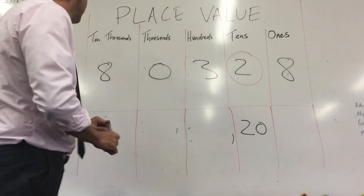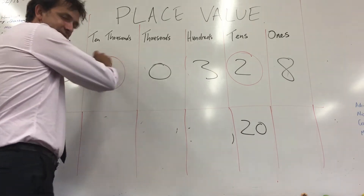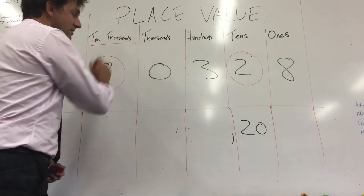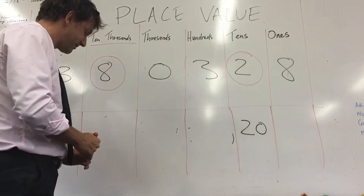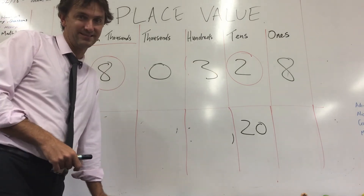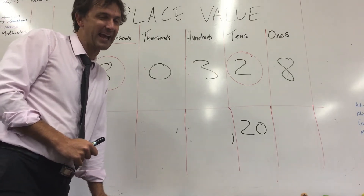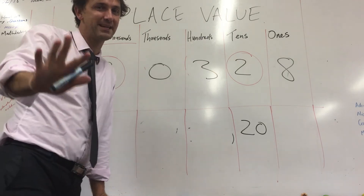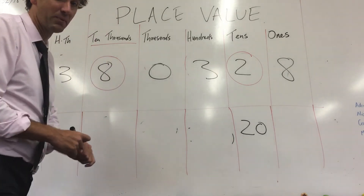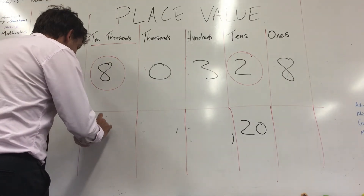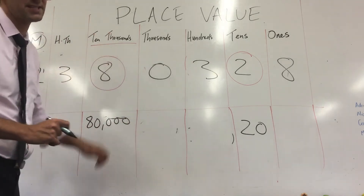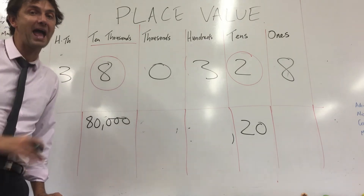What about this one? What's the value of this eight here? It's in the ten thousands column. The answer's not eight — it's eight lots of ten thousand. What's the value there? Eight lots of ten thousand. I hope you paused. It's actually eighty thousand, because it's eight lots of ten thousand. That eight there equals eighty thousand.